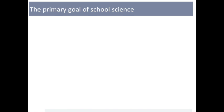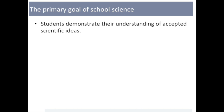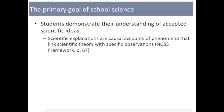First, let us take a step back and think about the big picture. We would argue that the primary goal of school science is for students to demonstrate their understanding of accepted scientific ideas. Many scientific ideas are explanations, which are causal accounts of phenomena that link scientific theory with specific observations.